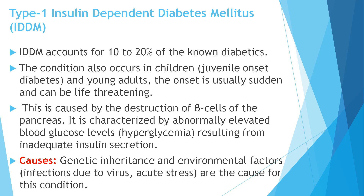Because of the destruction of beta cells, insulin is not secreted adequately, resulting in an abnormal elevated glucose level in the blood. This condition is called hyperglycemia.